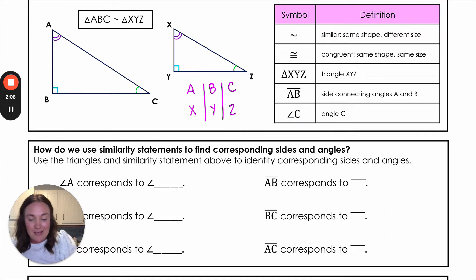This means that angle A is going to correspond to angle X. So I can see that A goes with X. That means angle B is going to correspond with angle Y. Those are both those right angles over here. Angle C is going to correspond with angle Z. And we can see that really clearly in that chart.